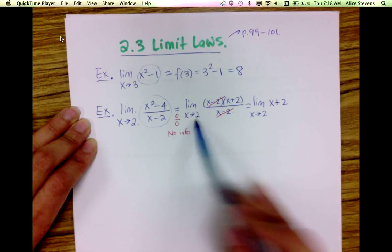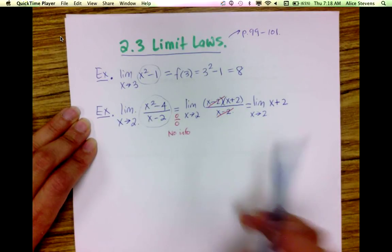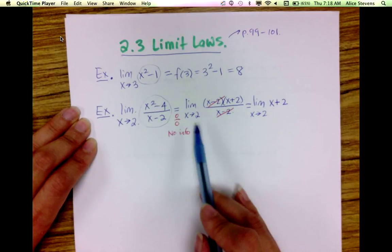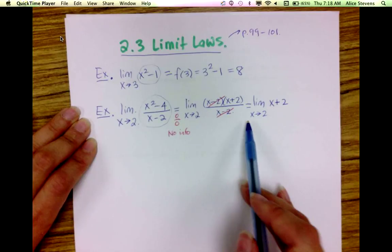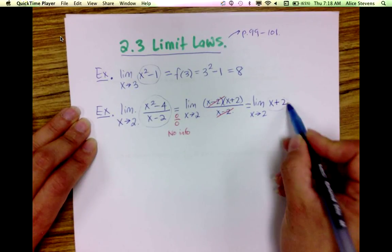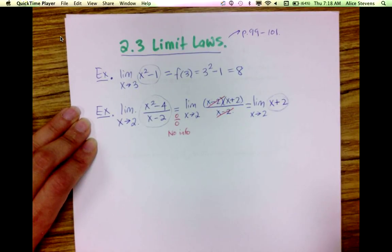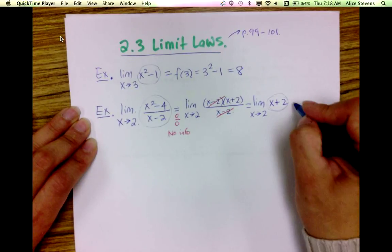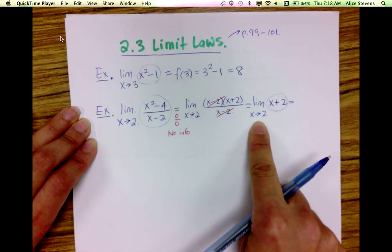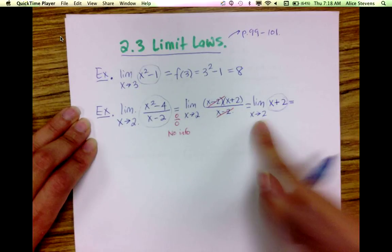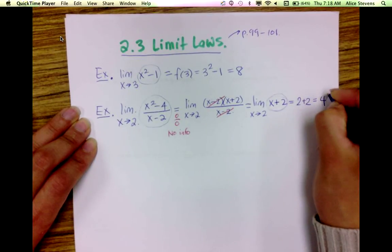However, the limit doesn't care what happens at 2 — it only cares what happens as we approach 2 from the left and right. So now since this is a line, it's a polynomial, therefore the direct substitution property applies, and the limit is just f(2), which is 2 plus 2, which gives me 4.